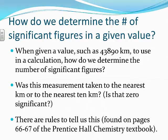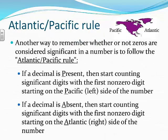Given a value like 43,890 kilometers, we need to determine the number of significant figures. Instead of memorizing many rules, we'll use the Atlantic-Pacific rule, which has just two parts. Remember: the Atlantic is on the east (right) coast and the Pacific is on the west (left) coast. If a decimal is present — note the P in present — we look at the Pacific (left) side. If a decimal is absent, we look at the Atlantic (right) side.